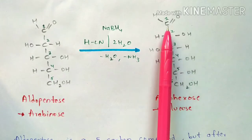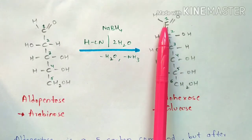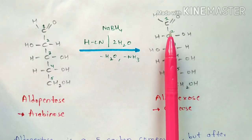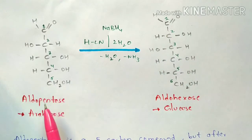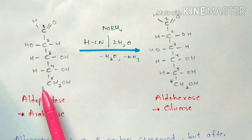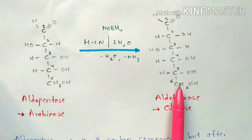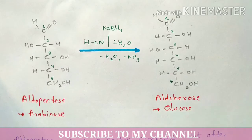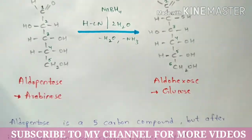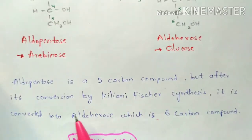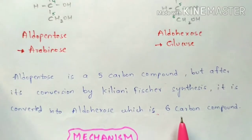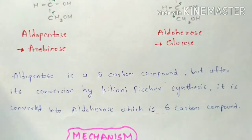The aldehyde group is present at the first carbon in both — hence they are named 'aldo.' The 6-carbon compound is called hexose and the 5-carbon compound is called pentose. This is the structure of arabinose, and this is the structure of glucose. After conversion by Kiliani-Fischer synthesis, the 5-carbon aldo pentose becomes the 6-carbon aldo hexose.